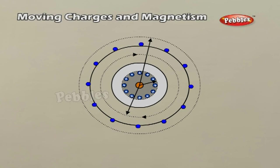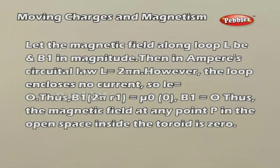Three circular Amperian loops 1, 2, and 3 are shown by dashed lines. By symmetry, the magnetic field should be tangential to each of them and constant in magnitude for a given loop. The circular areas bounded by loops 2 and 3 both cut the toroid, so that each turn of the current-carrying wire is cut once by loop 2 and twice by loop 3. Let the magnetic field along loop L be B₁ in magnitude. Then in Ampere's circular law, L equals 2πR₁.